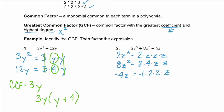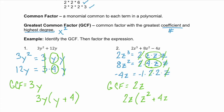We use the same process, but we look at all three terms and see what all three of them have in common. Notice that they all have a 2 and they all have a z. So our GCF here is 2z. If we factor out that GCF, the first term leaves behind z squared, the second term leaves behind positive 4z, and the third term leaves behind negative 2.